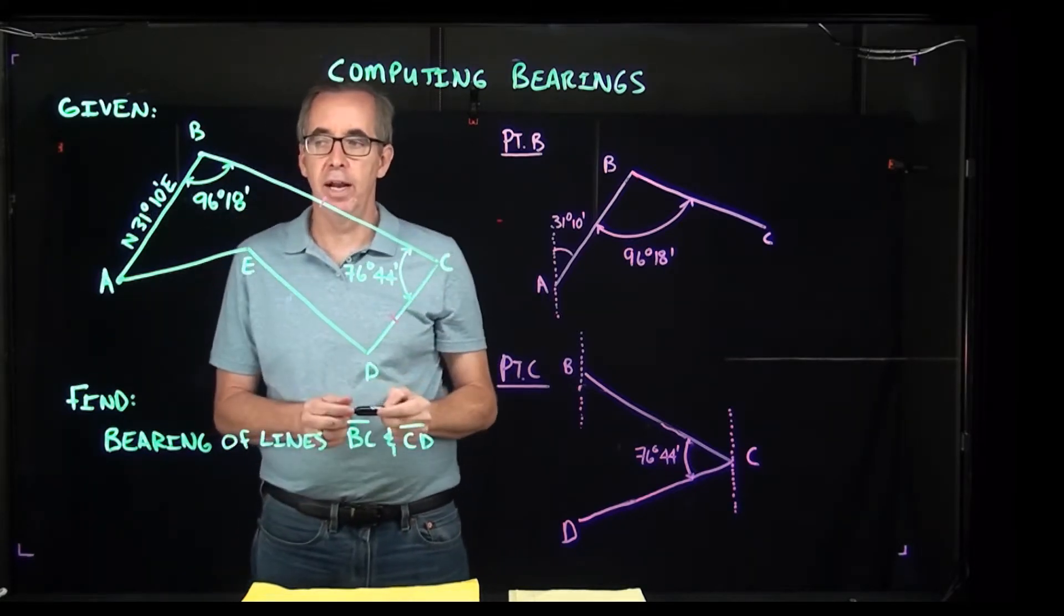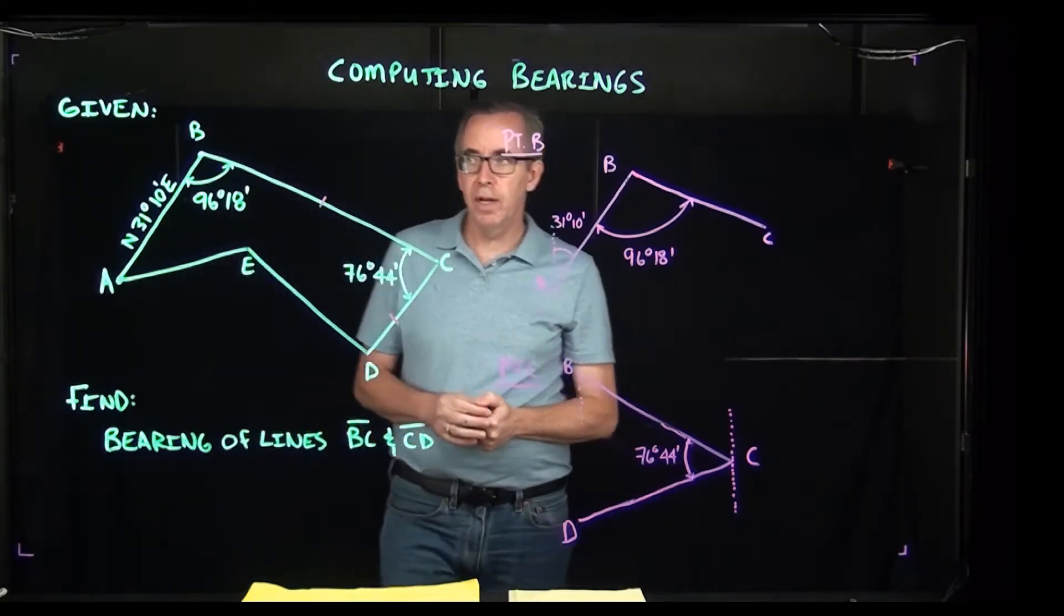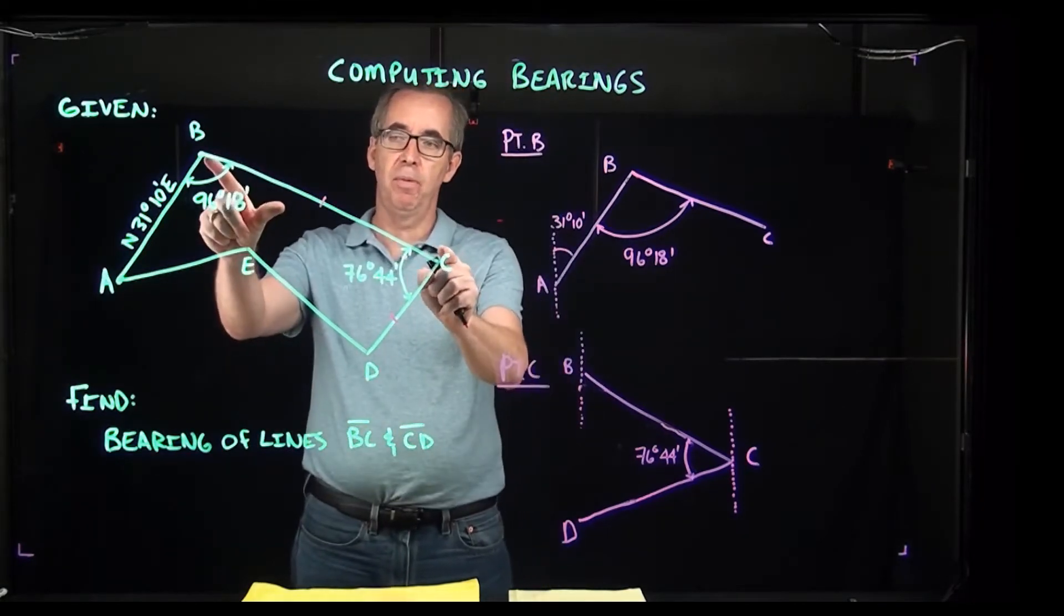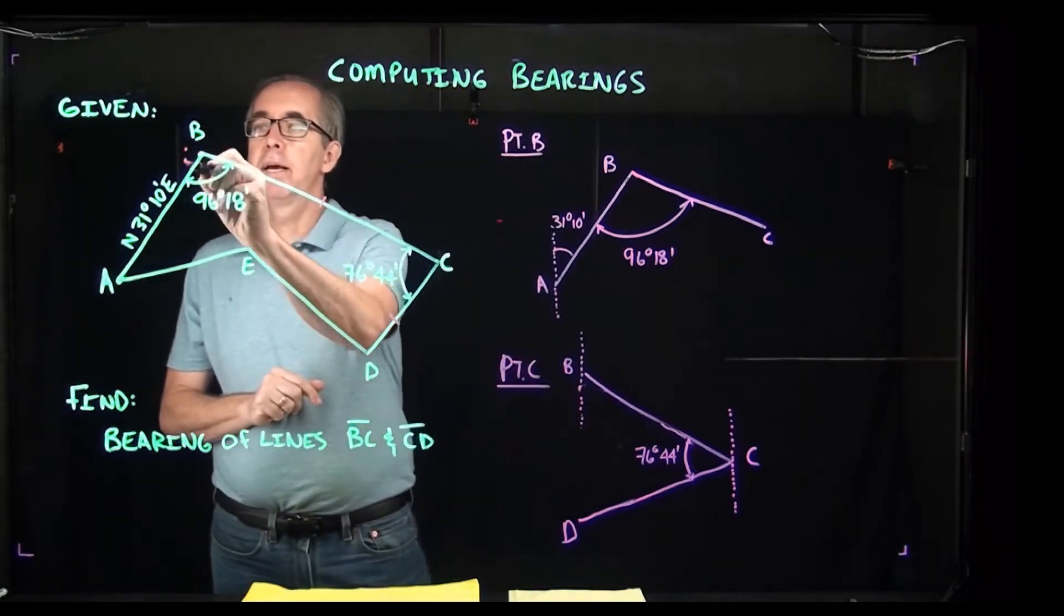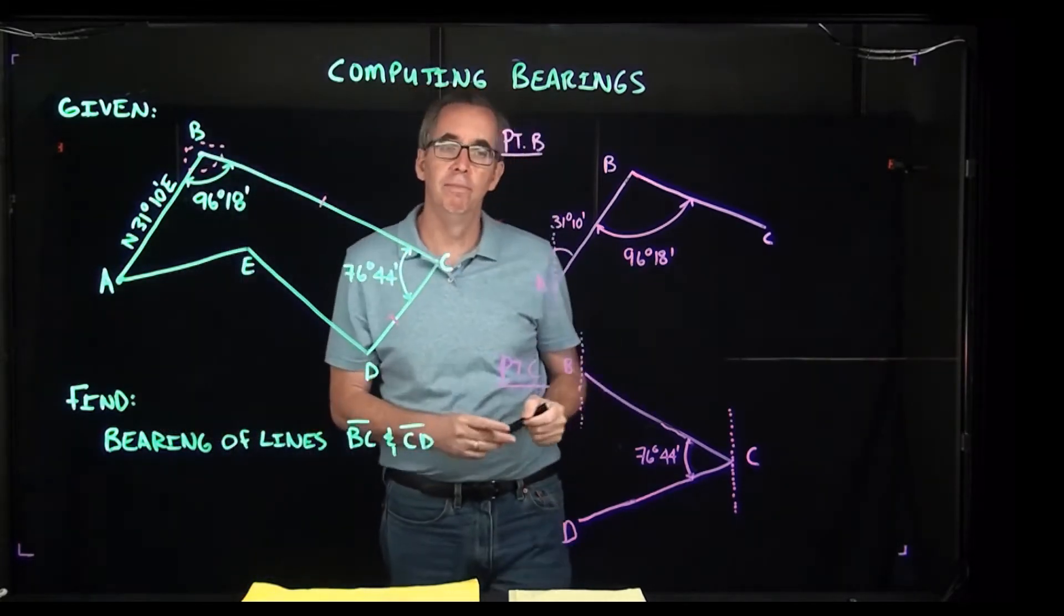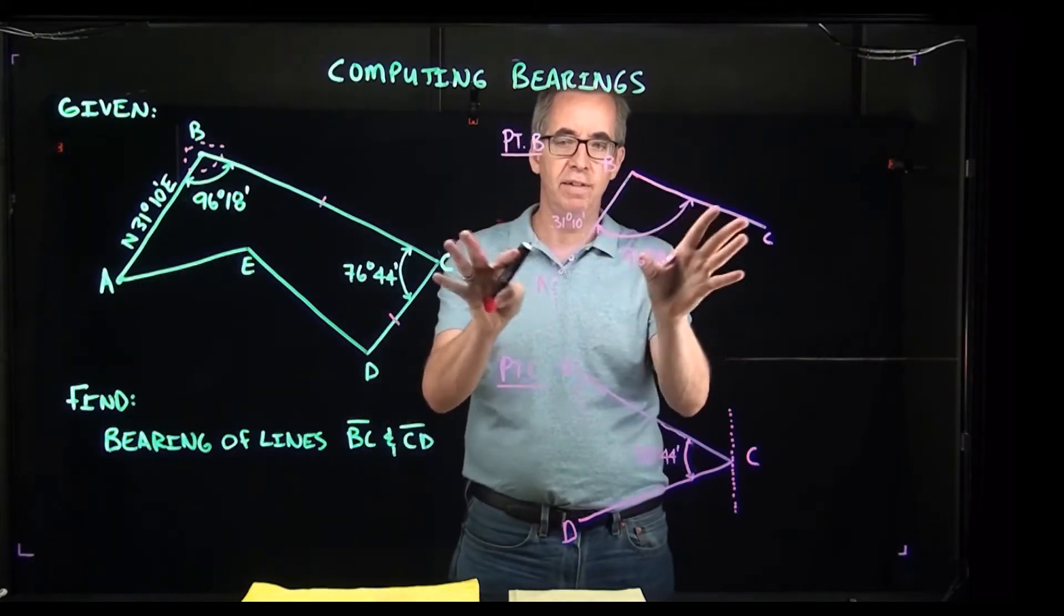The first thing I'm doing is looking at the points of interest. If I'm going to write a bearing for point BC, I start by looking at this point right here, which is what we have for point B, and I'm redrawing it, giving more detail to it.